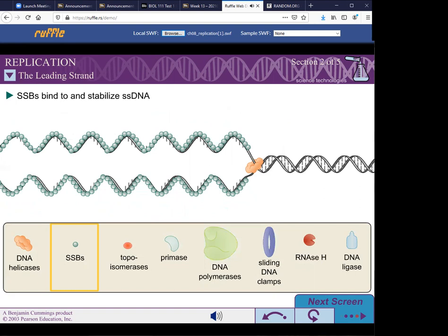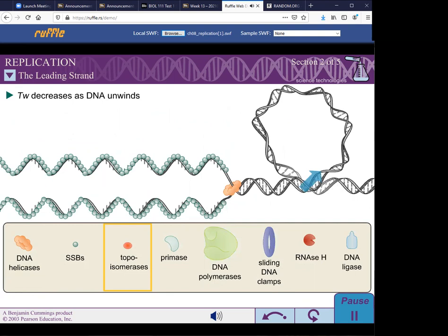As the DNA unwinds, the twist number decreases. Therefore, the rise number must increase, causing the DNA to become positively supercoiled. These supercoils are removed by topoisomerases.